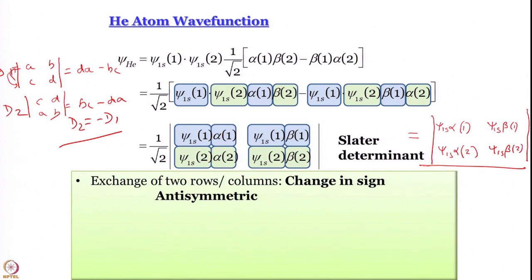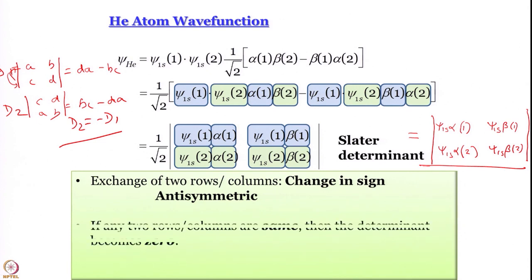Now, remember our total wave function has to be antisymmetric. By the property of determinants, you are always going to get an antisymmetric function. So you cannot make a mistake — if you accidentally write a plus sign somewhere, the determinant won't allow it. Since determinants change sign upon exchange of two rows or two columns, when you write the wave function in determinant form you are assured that you have written an antisymmetric wave function.